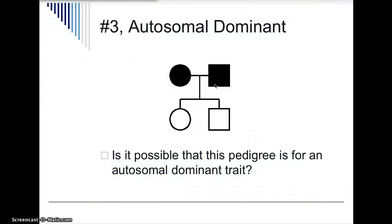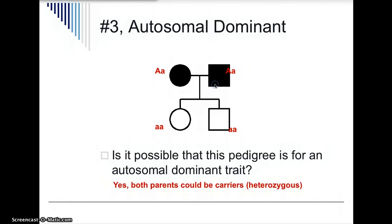Is it possible that this pedigree is for an autosomal dominant trait? If we look at the two parents, they would each have to have at least one dominant allele. The children would both have to be homozygous recessive in order to not show the dominant trait. If both parents are heterozygous, doing out a Punnett square shows there's a 25% chance a child could be homozygous recessive. So yes, it is possible — and it probably is autosomal dominant because it cannot be a recessive trait.